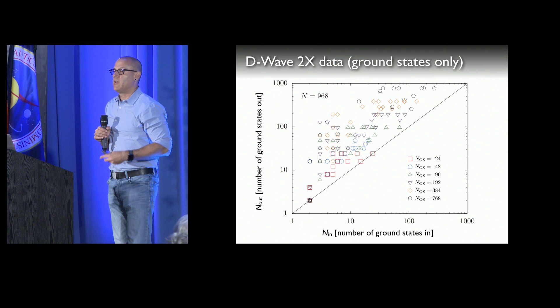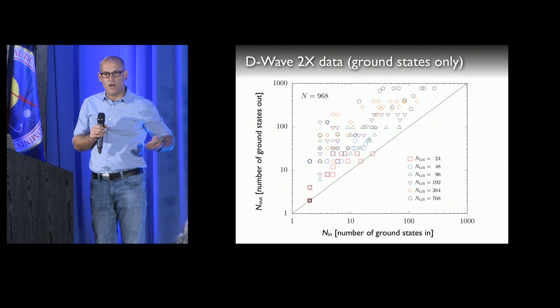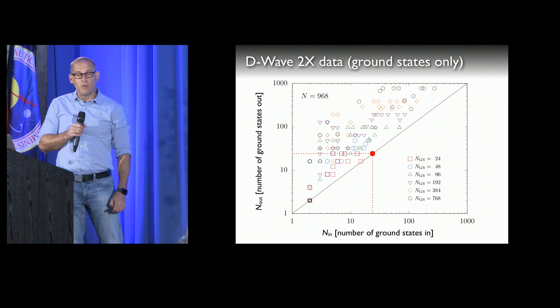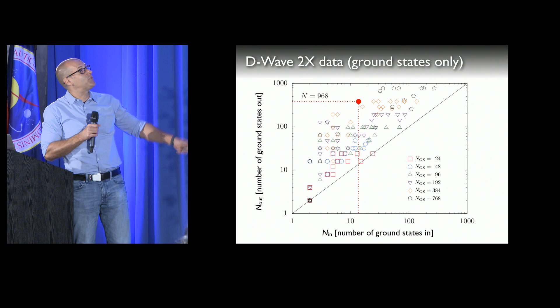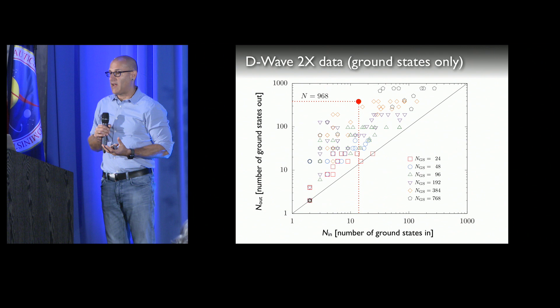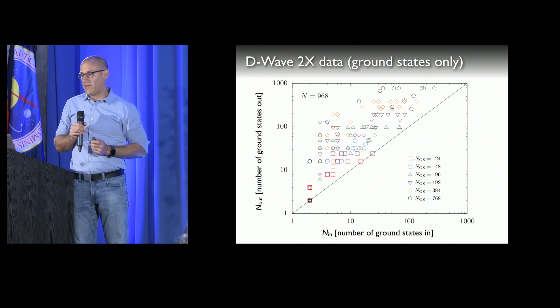Let me show you how this works. On the horizontal axis you have the number of ground state configurations fed into the algorithm, and on the vertical axis what we get out. All dots are on the top-left triangle, meaning we always get more out than we fed in. A couple cases lie on the diagonal — where we already knew all minimizing configurations. But in one case we start with roughly 15 ground states and get about 250 out. This means we can save a lot of CPU.